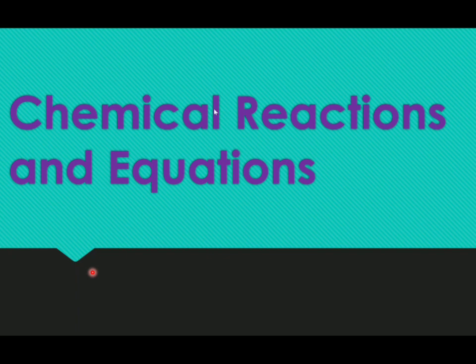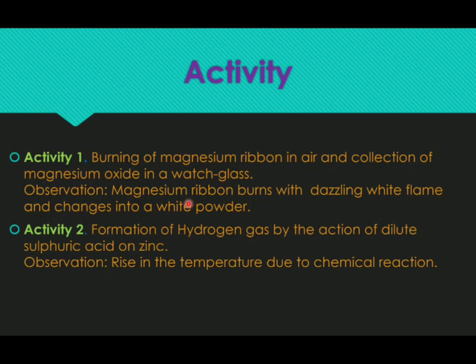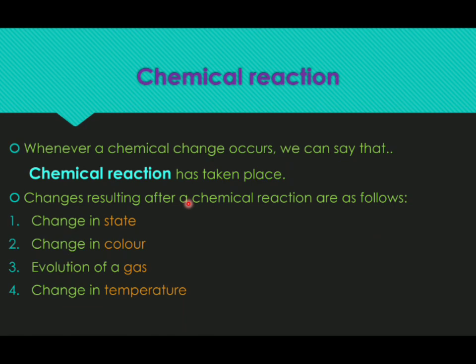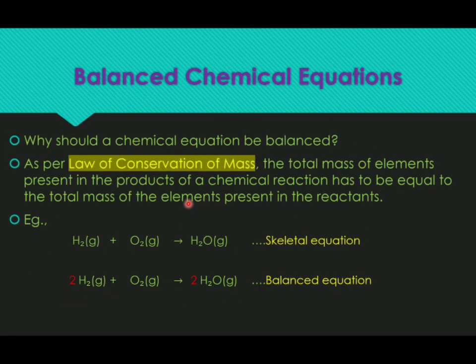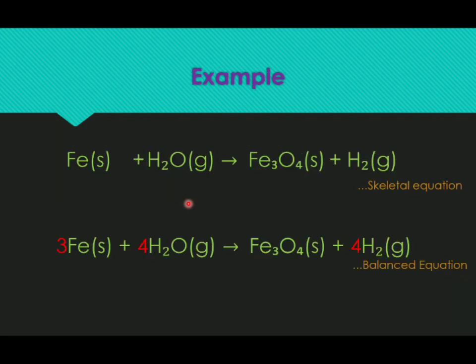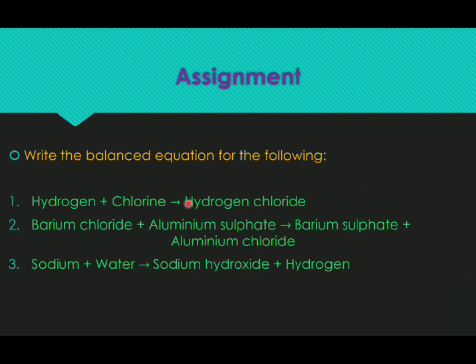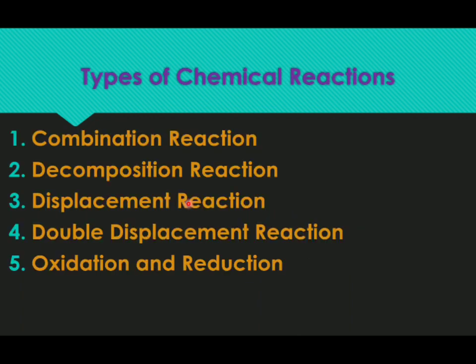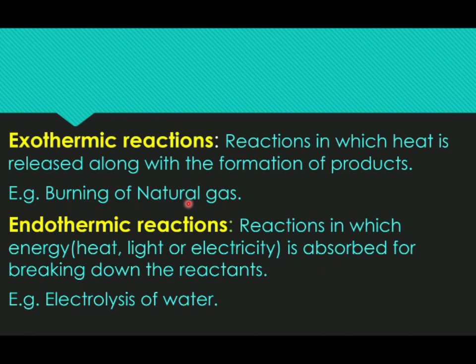Hello children, hope you all are doing very good. In the previous session, we had learnt chemical reactions and equations. In this chapter, you had learnt what is a chemical reaction, how to write a chemical equation and how to balance it, and why we should balance a chemical equation. We have seen a few examples and I hope you have completed the assignment also. We started with types of chemical reactions — combination reaction — and also two types called exothermic and endothermic.